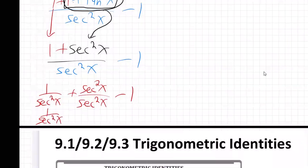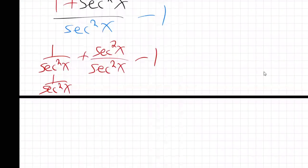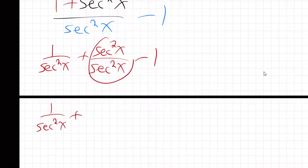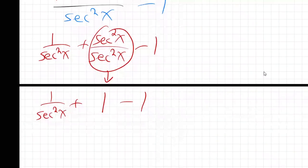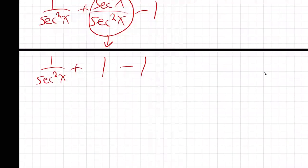Because sec²x over sec²x — the same thing over itself — equals one. So we have one over sec²x plus one minus one, and the minus one cancels. This is just one over sec²x.